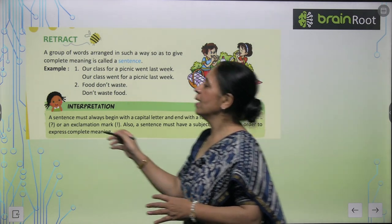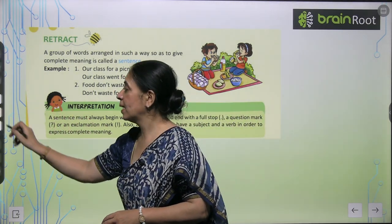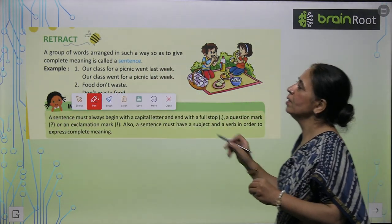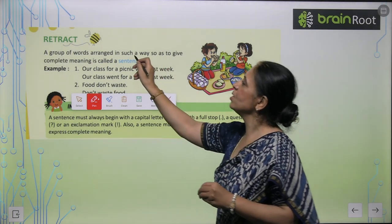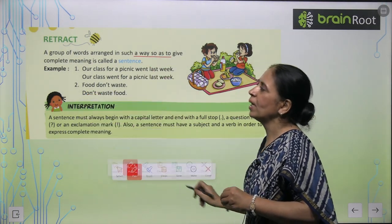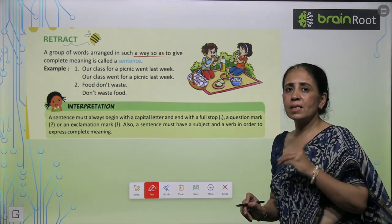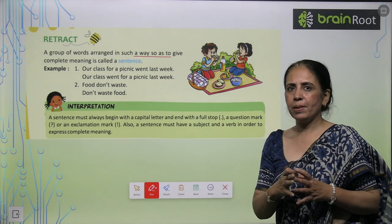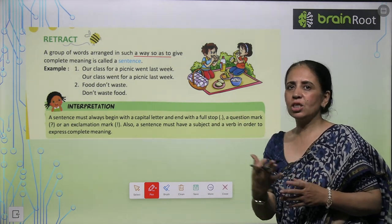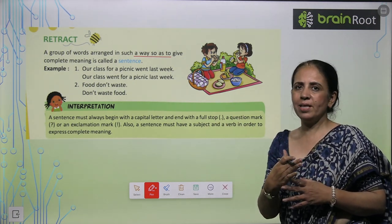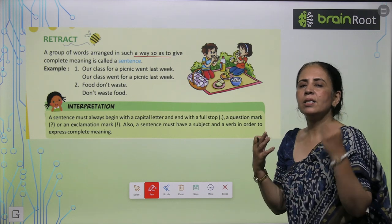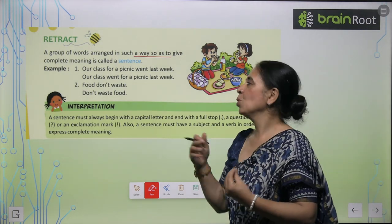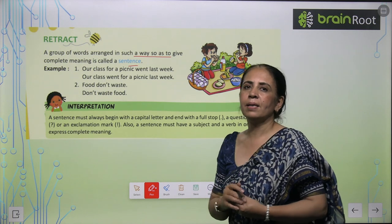First let's talk about what is a sentence. A group of words arranged in such a way so that it gives complete meaning. If you have some words, we have arranged them in a good order and the meaning is clear — so it is written as a sentence.